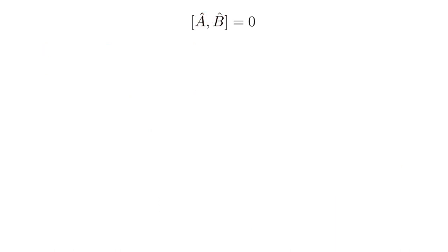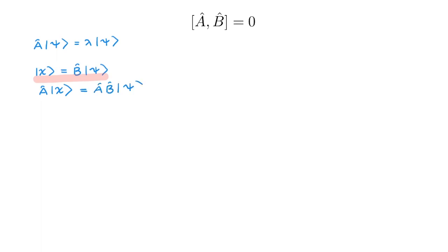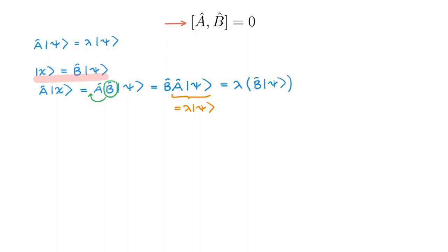To prove the intuitive result we just discussed, let's start with the eigenvalue equation for A, which is A psi equals lambda psi. The first thing we want to prove is that a new ket chi, obtained by acting with B on psi, is also an eigenstate of A with the same eigenvalue lambda. To do this, we act with A on chi, use the definition of chi in terms of B and psi, then use the fact that A and B commute to exchange them. Using the fact that psi is an eigenstate of A, we move the scalar lambda to the beginning and finally obtain lambda chi. So A acting on chi gives lambda chi, meaning chi is also an eigenstate of A with the same eigenvalue lambda.